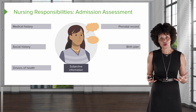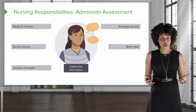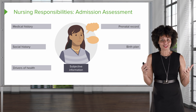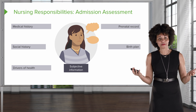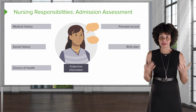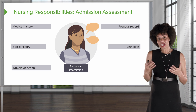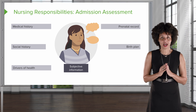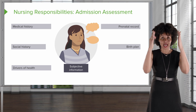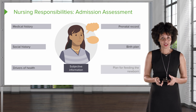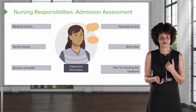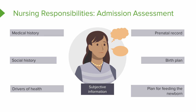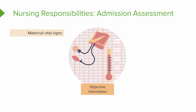Clients also have a lot of say in what happens in labor — who's in the room, whether a photographer comes, whether they're going to have a doula, whether they want in-laws in the room. The client will put all that in their birth plan and then we can use that. We also want to know what the plan is for feeding the newborn. That's the subjective information.